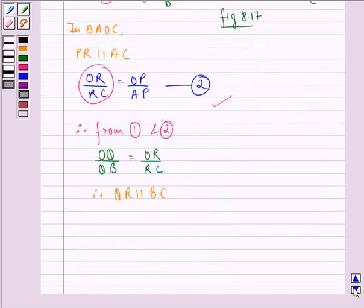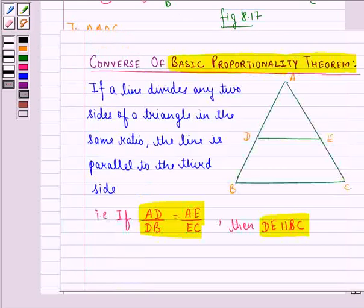Now we see that this happens because the converse of basic proportionality theorem says that if a line divides any two sides of a triangle in the same ratio, the line is parallel to the third side. That means if in triangle ABC, AD by BD is equal to AE by EC, then the line DE is parallel to BC.